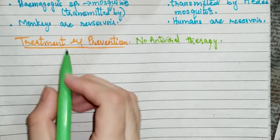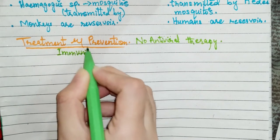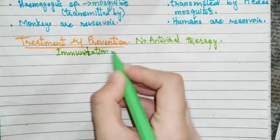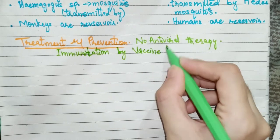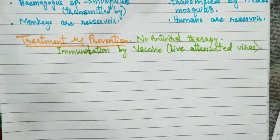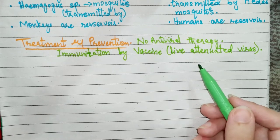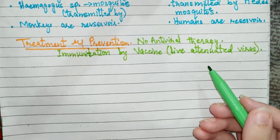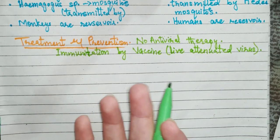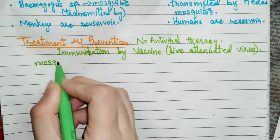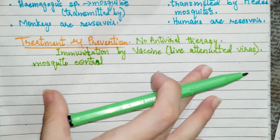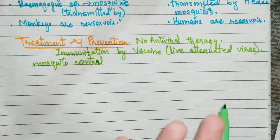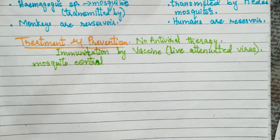In prevention, immunization is done by a vaccine that contains a live attenuated virus. Vaccination is very important especially for travelers going to the jungle or endemic areas. Mosquito control is also essential — since these mosquitoes breed in stagnant water, drainage is needed along with insecticides. Personal protection measures include mosquito repellents and clothing that fully covers the body.